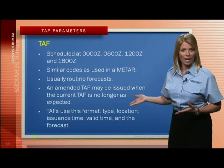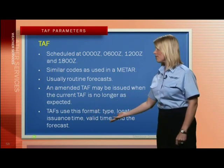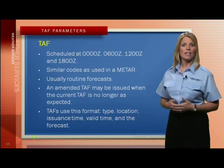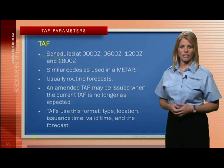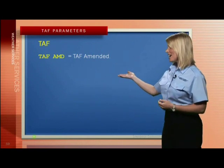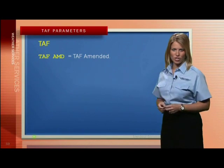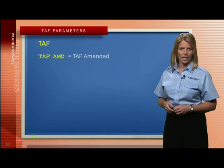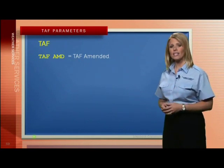TAFs use this format: type, location, issuance time, valid time, and the forecast. A TAF can be amended if conditions warrant — an amendment is issued when the forecast is no longer as expected. An amended TAF looks like TAF-AMD. If the forecasters have made a correction, it is TAF-COR. Or if the TAF has been delayed and you are still waiting for information, it is TAF-RTD.